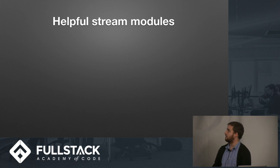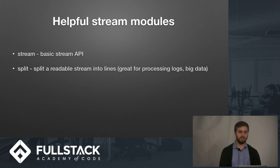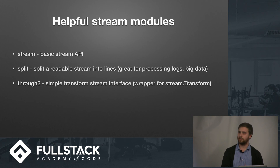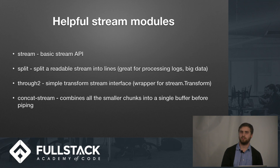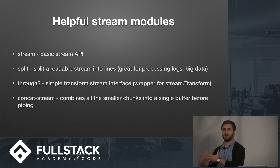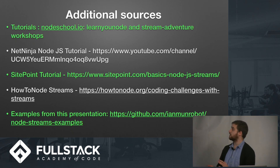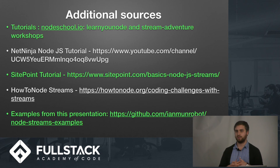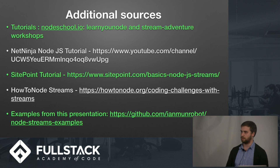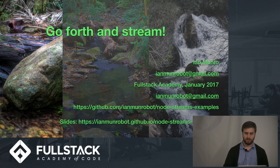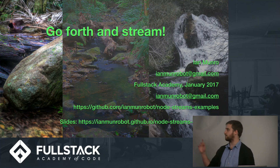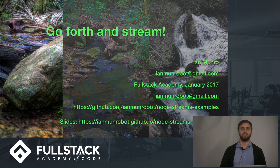Here are a couple of helpful stream modules to look at. The basic API is the stream module. We're also able to split things into lines — really helpful for reading logs. Through2 is that main transform stream module I talked about. Concat-stream will combine various streams into a single thing, giving you all the buffer together before processing — that's really helpful if you want to do something to an image that may span multiple chunks. For learning more, I highly recommend the nodeschool.io courses for Node in general and streams specifically — challenging but very fun. The examples are up on GitHub and the slides are also on the repo. Thank you very much.